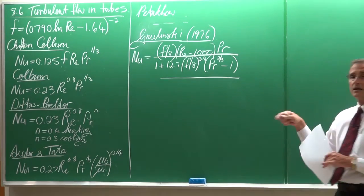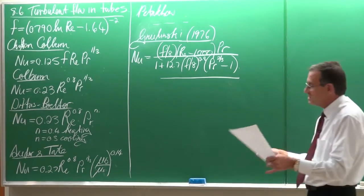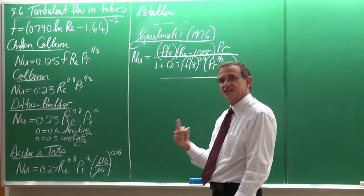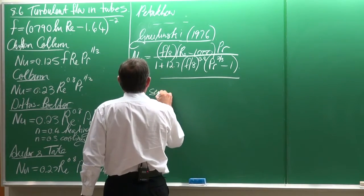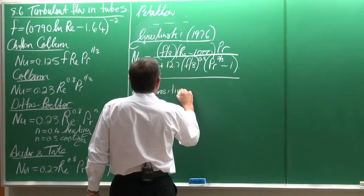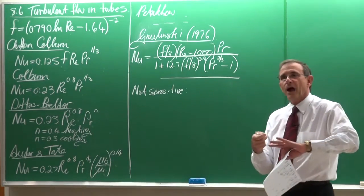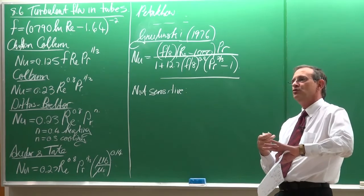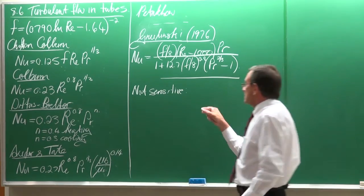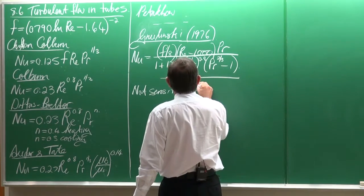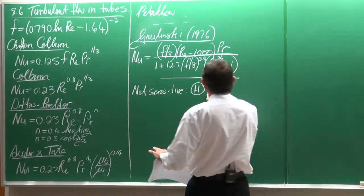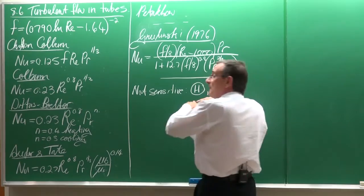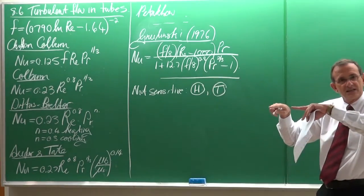Now, a few things that I need to say about these equations. Firstly, they are not sensitive. So they are not sensitive for different boundary conditions, how we do the heating and or cooling. So if we look at previously where we had a constant heat flux and a constant wall temperature, and they differed in terms of their characteristics, with turbulent flow,